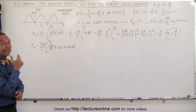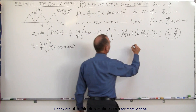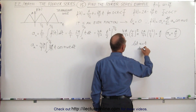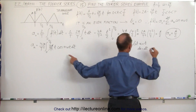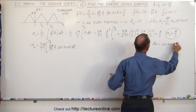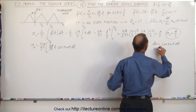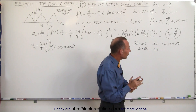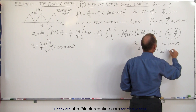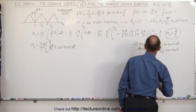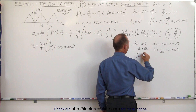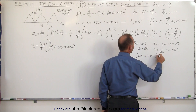Now we have t times the cosine of nωt dt, so we'll need to use integration by parts. Let u = t, then du = dt, and let dv = cos(nωt) dt, which means that v will be the integral of that. The integral of cosine is sine, so v = 1/(nω) times sin(nωt). We know that the integral of u dv equals u times v minus the integral of v du.